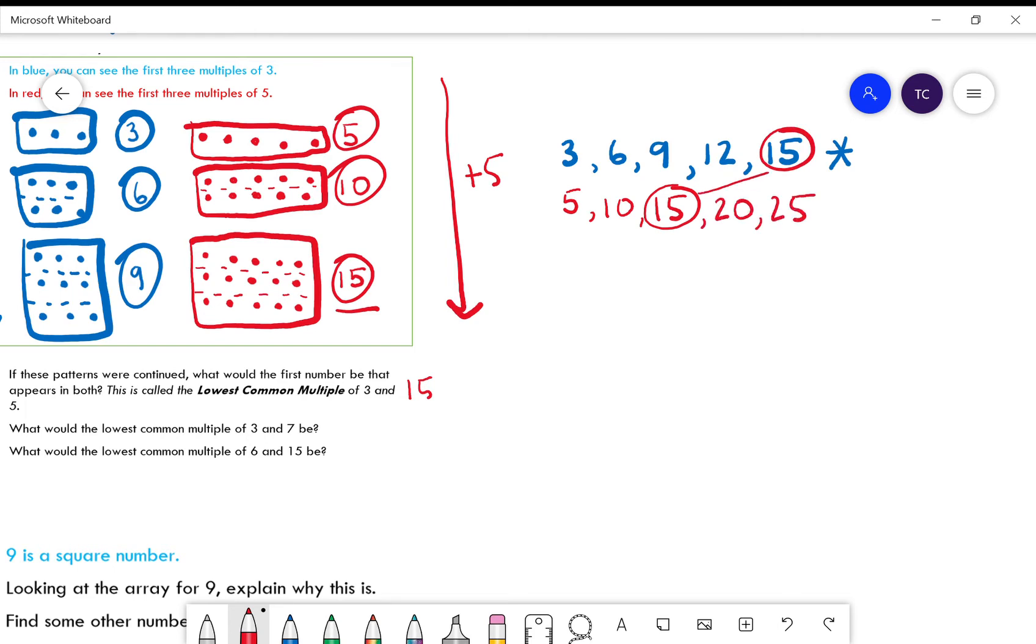So we've got 15 here and here, and then we'd have 20 and 25. So the lowest common multiple of 3 and 5 is equal to 15.